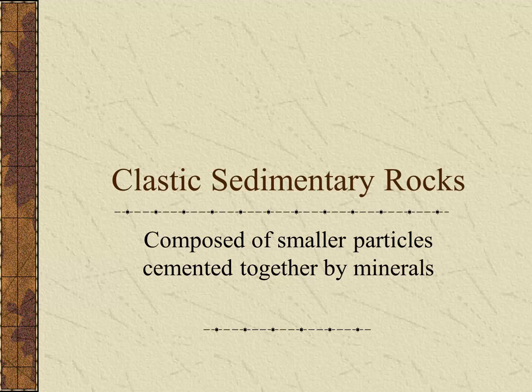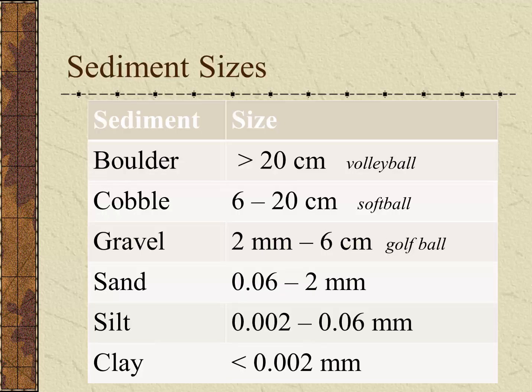Clastic sedimentary rocks are composed of smaller particles that have been cemented together by other minerals. It's worth taking a look at sediment sizes because the different sediment sizes will tell us what kind of sedimentary rock we may end up with. Sand, silt, and clay are all quite small, but there's also gravel, about the size of golf balls, cobbles, about the size of softballs, and boulders, larger than a volleyball.